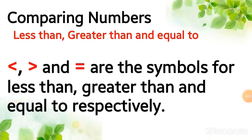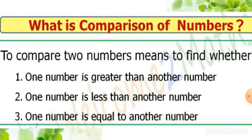Comparing numbers — less than, greater than, and equal to. These are the symbols for less than, greater than, and equal to respectively. To compare two numbers means to find whether one number is greater than another, one number is less than another, or one number is equal to another.